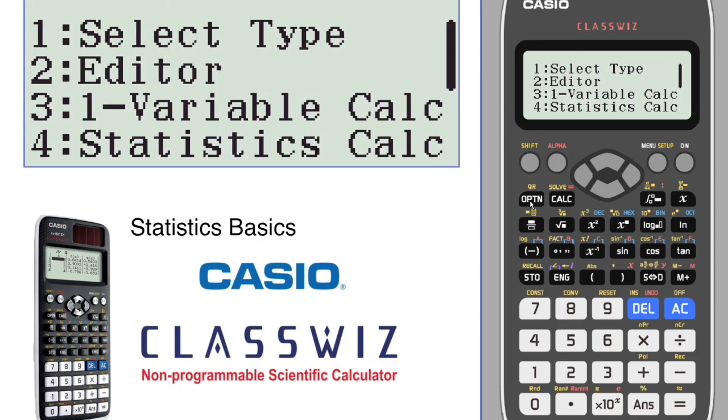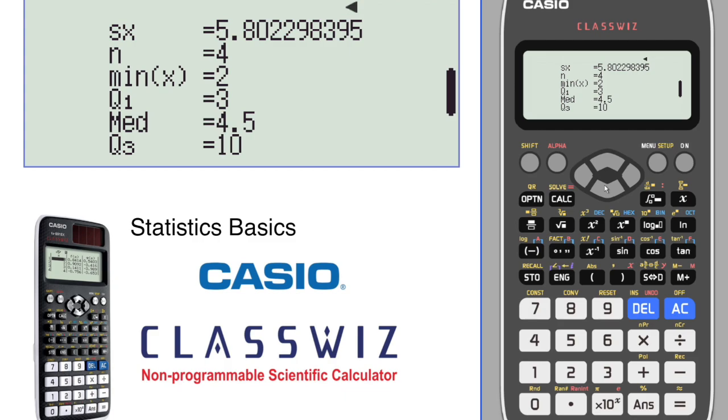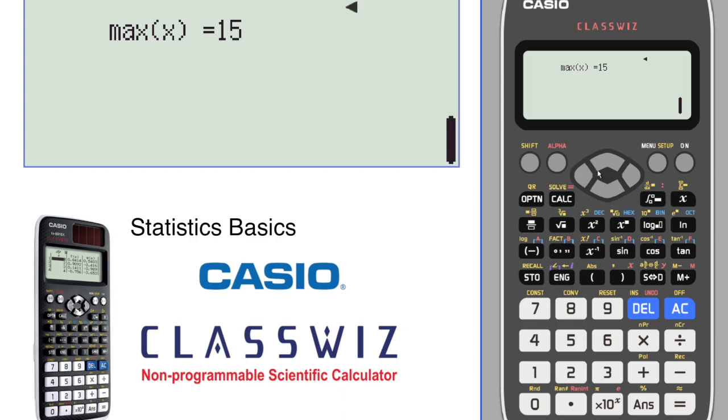Let's see what options we have. You can select the data type, which we've already done, go into the editor and make any changes, look at one variable statistics. We'll have a look at that. Here's your mean, sum, sum of squares. We've got variances and standard deviations and population standard deviations, quartiles, five number summary, min, max, etc.